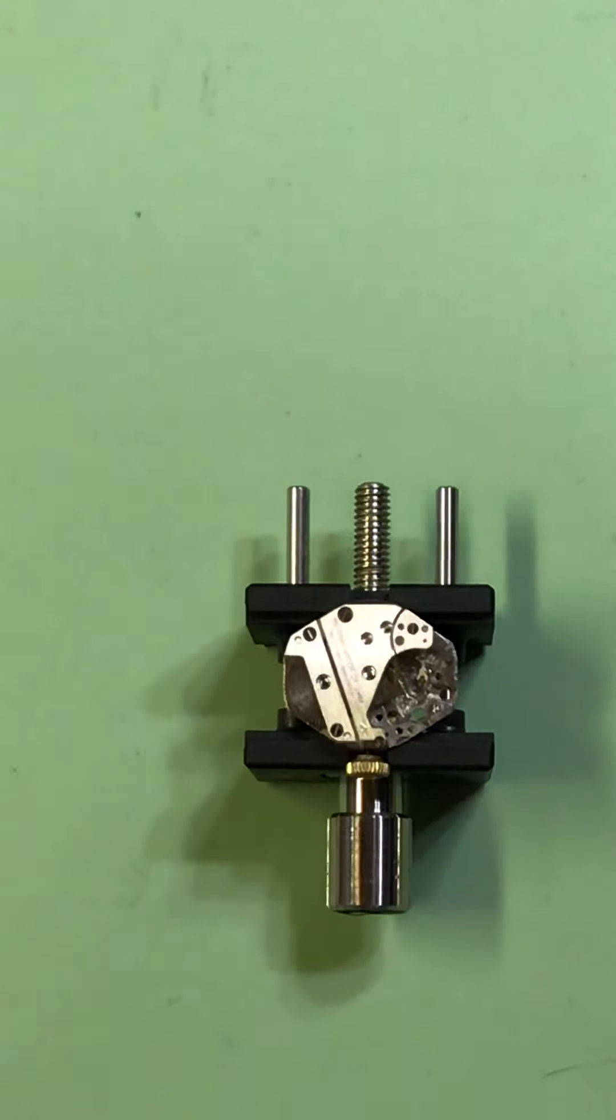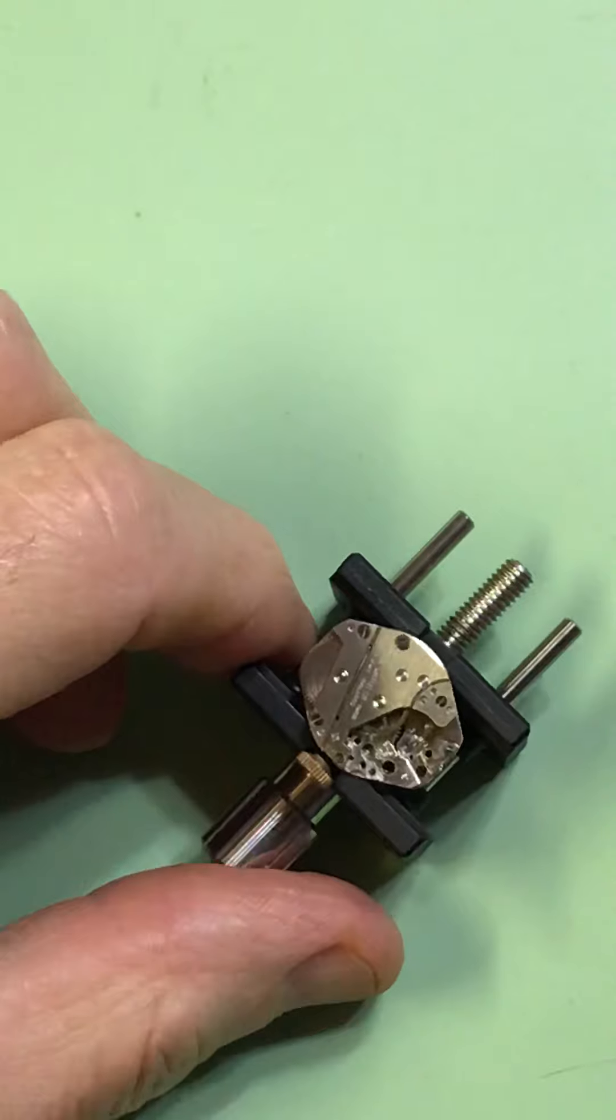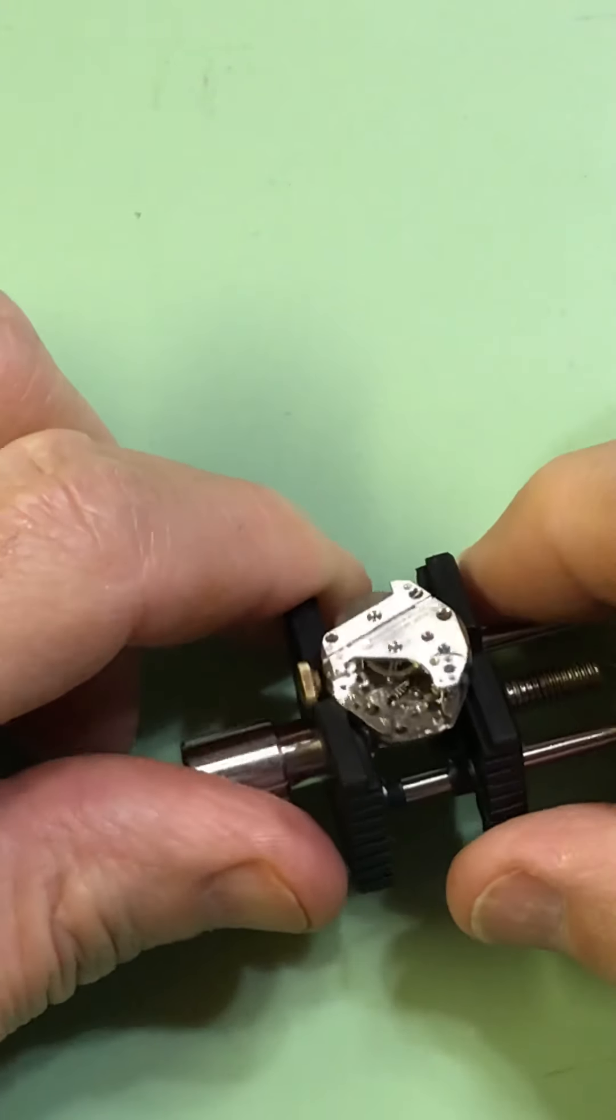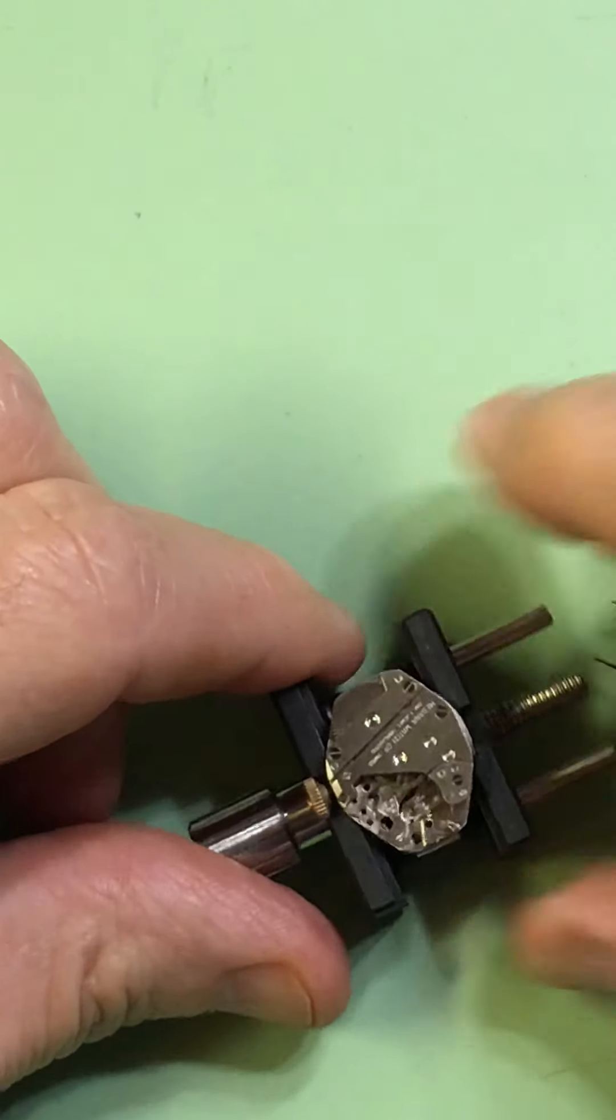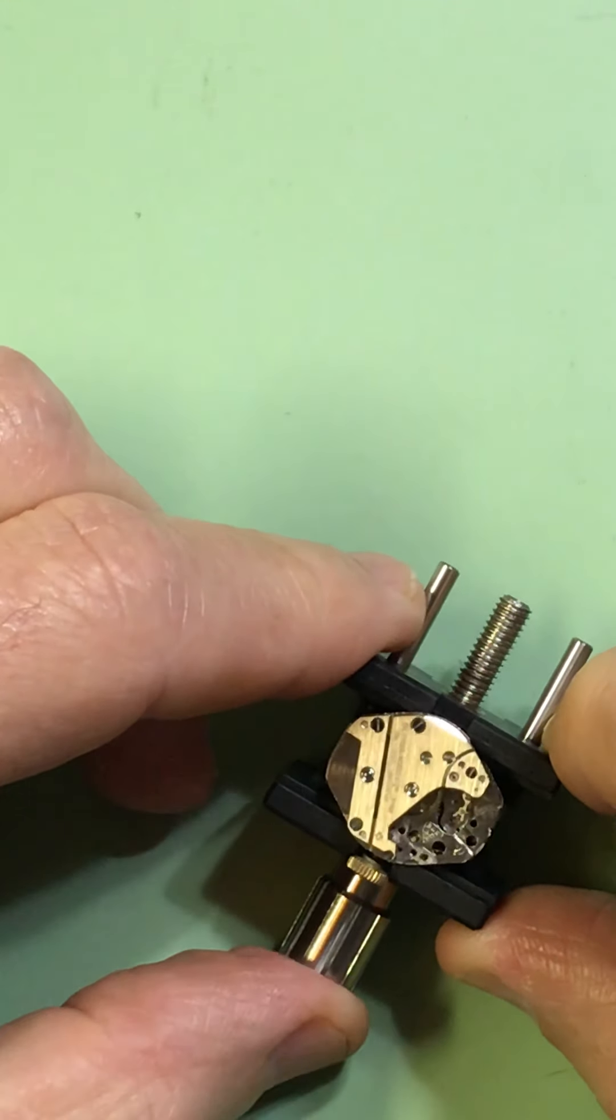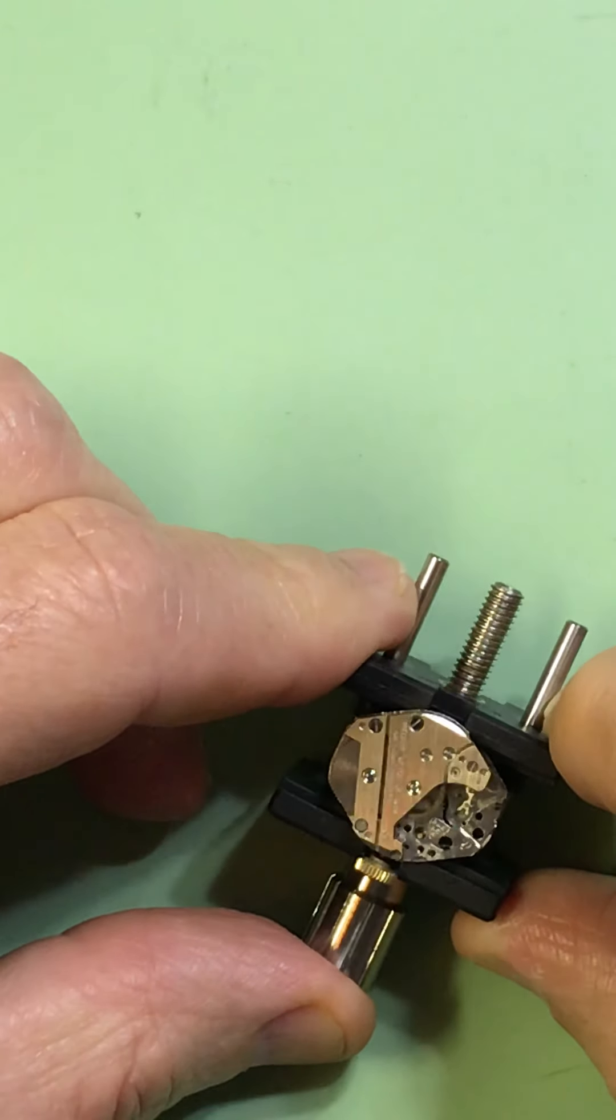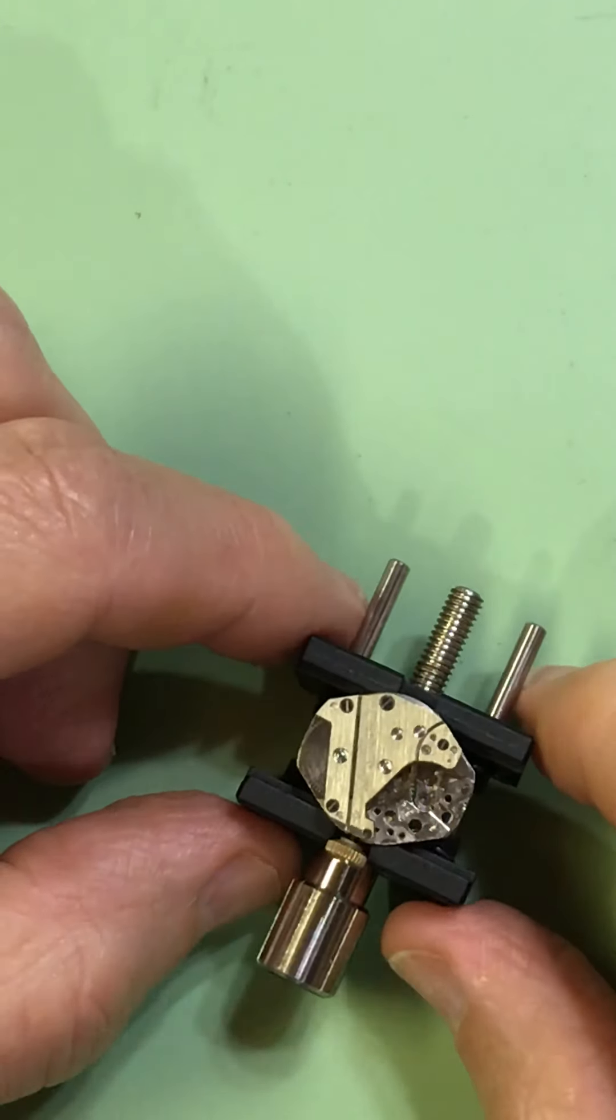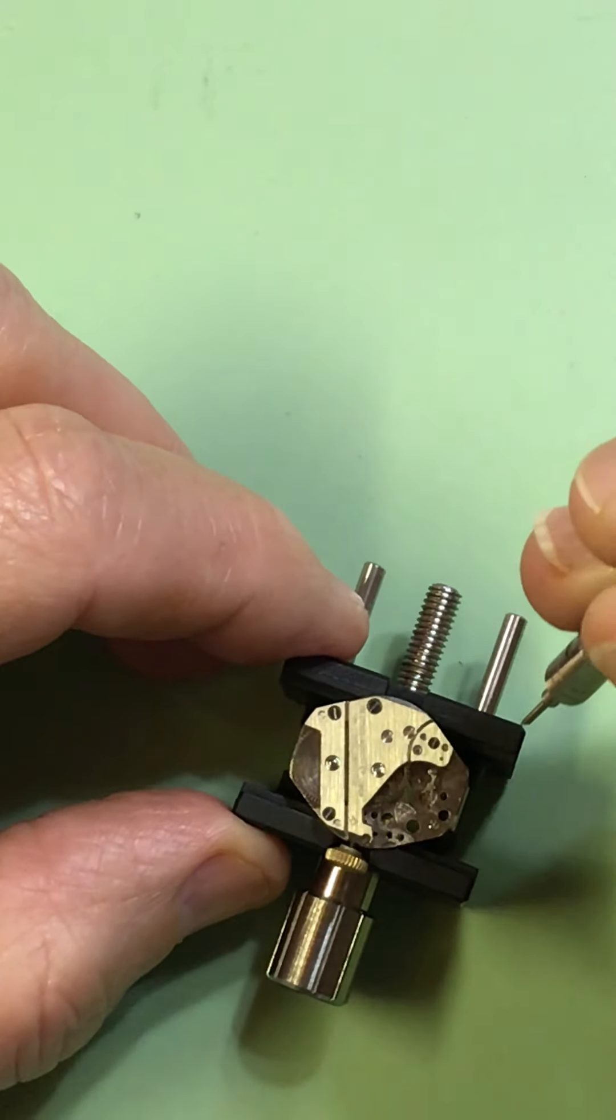Continuing with Ginny's mother's Swiss watch, at this point I'm going to remove the train wheel bridge, and it may be the pallets bridge but we'll see here.